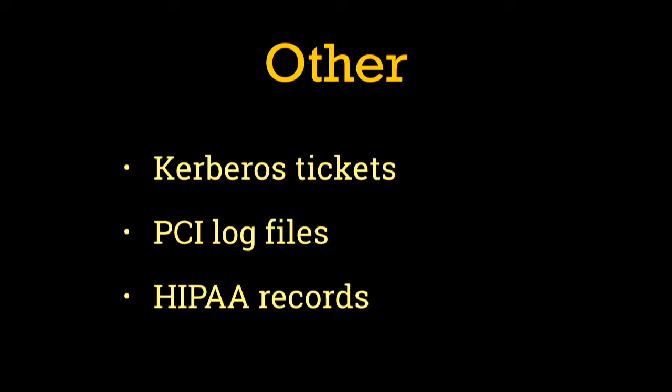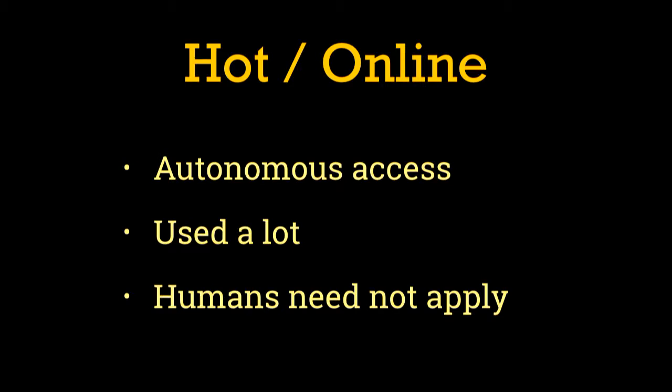Hot secrets or online secrets are things that are needed during the normal operation of your infrastructure, and they need to be used and manipulated autonomously. For example, you have a Flask web app — if a human had to sit at the console and type in the database password every time a new web request came in, your app's not going to get a whole lot of work done. So that's an example of something where it needs to be available for the application to use whenever it wants without human interaction.